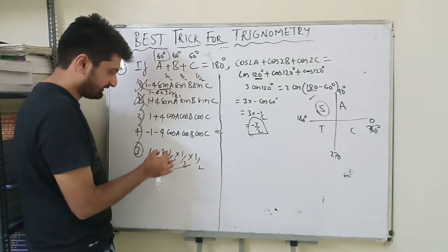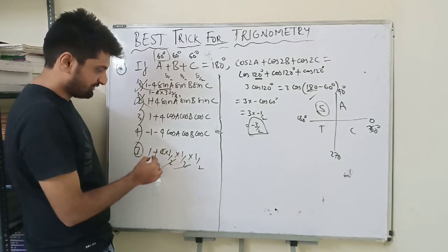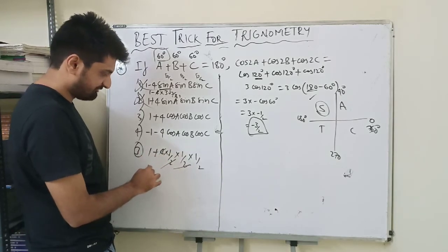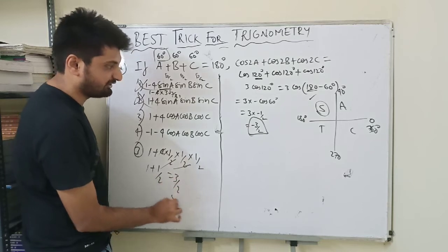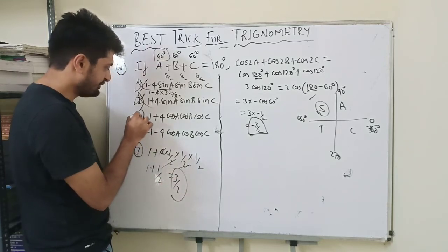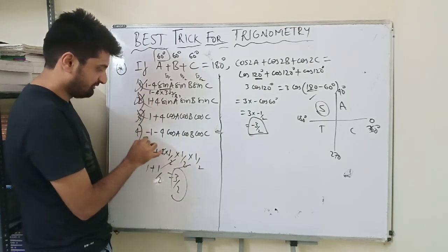1 plus 1 by 2, which is 3 by 2, which is not the correct option.